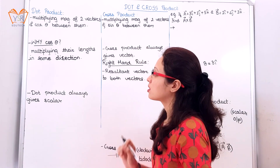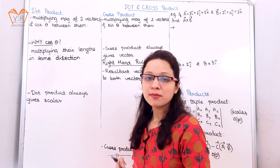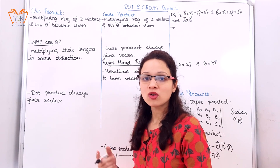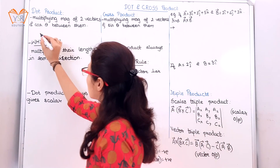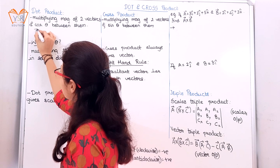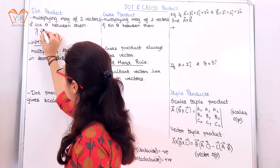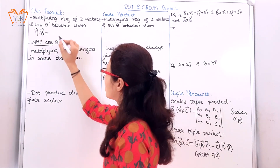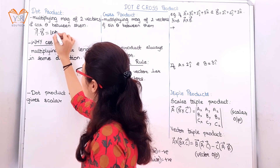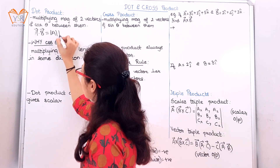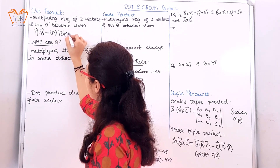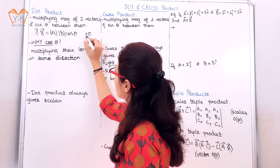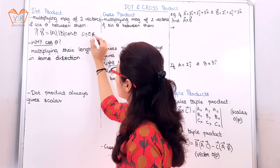Starting with dot product, it is nothing but multiplying the magnitudes of two vectors and multiplying the cosine of the angle between them. So dot product is represented as a⃗ · b⃗ = |a||b|cosθ, where the range of theta is from 0 to π.